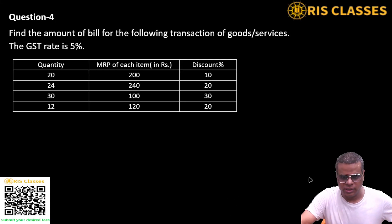Question number four, solution is here. Find the amount of bill for the following transaction of goods and services. The GST rate is 5% is given.